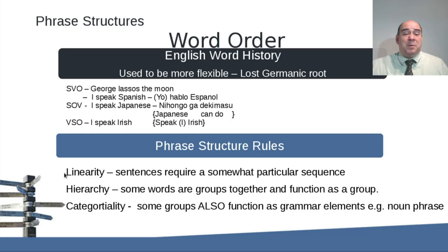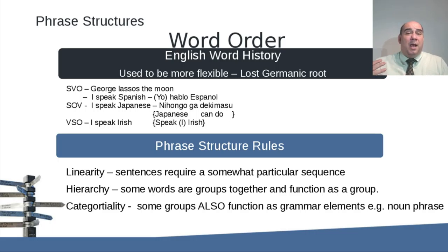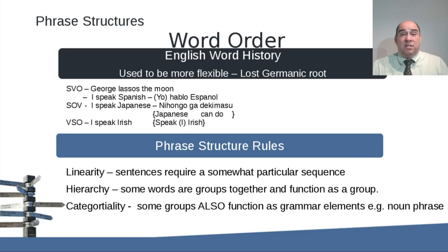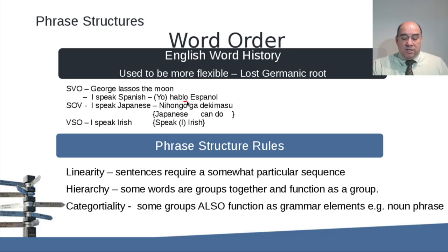Now let's look at some of the general phrase structure rules. The first one is linearity. Some sentences require a strict order of things because they're more analytic — they require the subject at the beginning, the verb in a certain place, and prepositional phrases in particular positions. Others don't. In Japanese they don't even require the subject, because it's understood or the verb tells you what the subject is. Similarly in Spanish, you don't need 'yo' — you can just say 'hablo español' and the '-o' ending in 'hablo' indicates who is speaking. That's linearity — sometimes more defined, sometimes less.